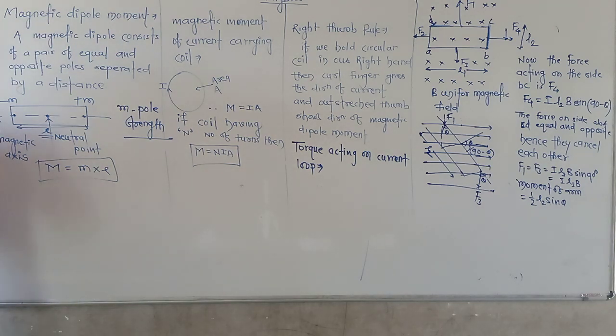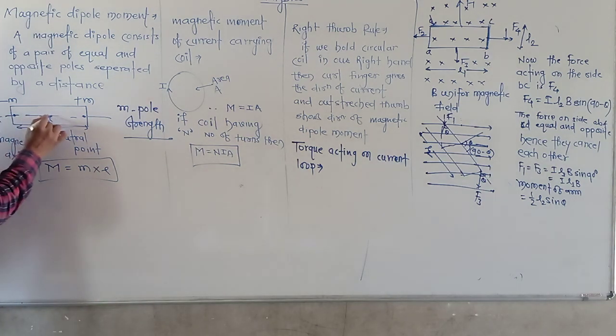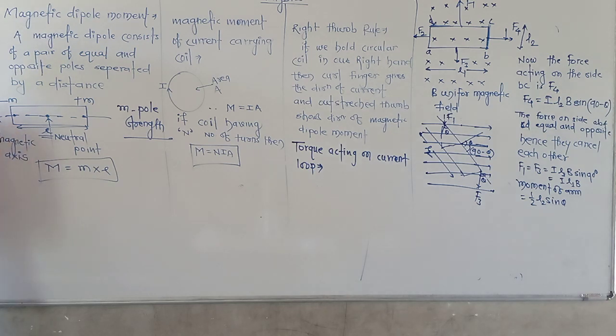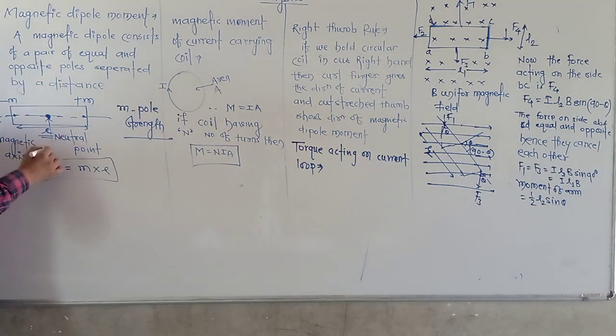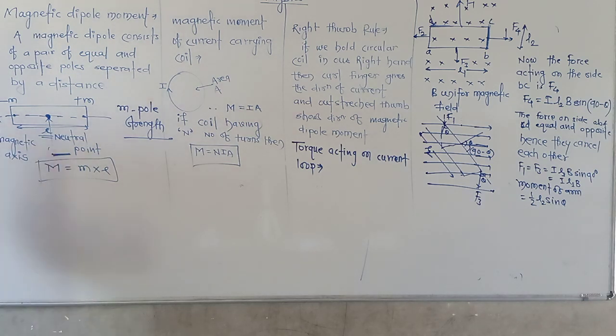From the centre there is one axis going, and that axis is called the magnetic axis. The perpendicular point at the centre is called the neutral point.